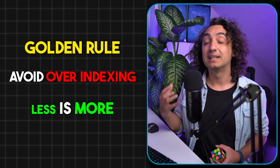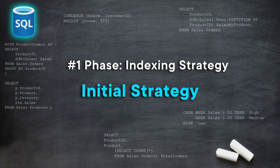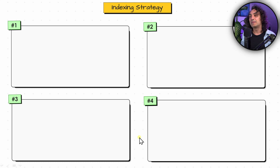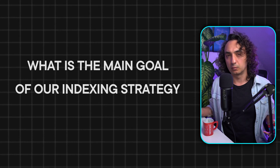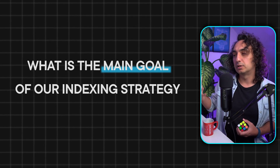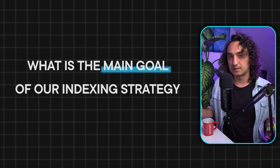Avoid over-indexing — write that in your development guideline with a big statement. That is the first statement in your indexing strategy. Now, we can split the indexing strategy into four phases, each with multiple steps. The first phase is creating an initial indexing strategy. Once you start a new SQL project, you have to define the objectives very clearly — what we are focusing on and what we want to achieve.